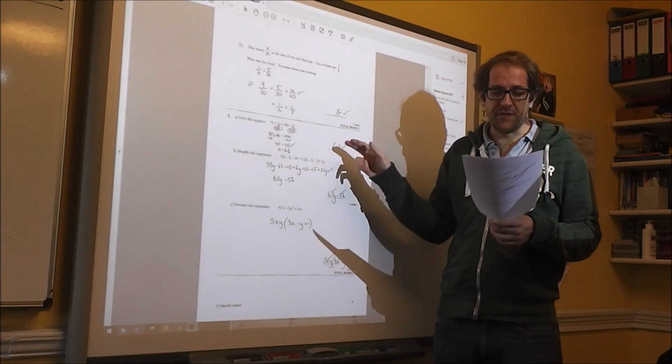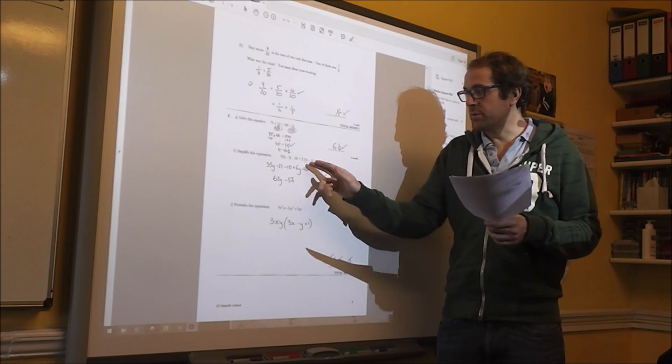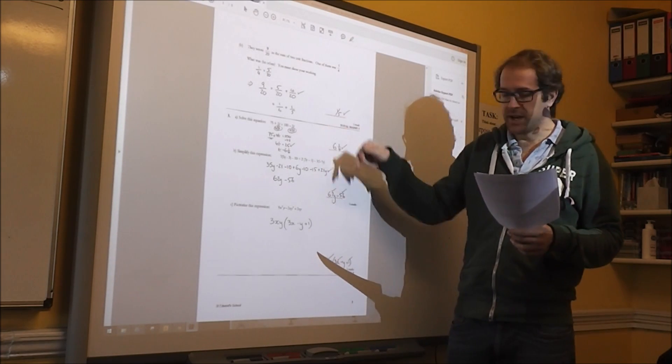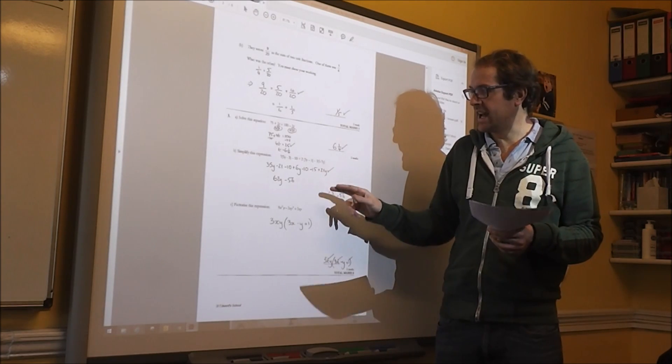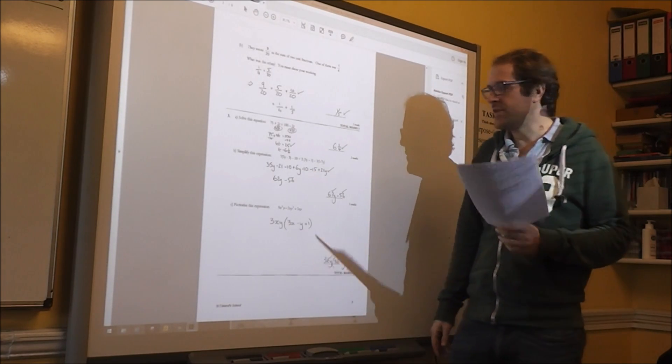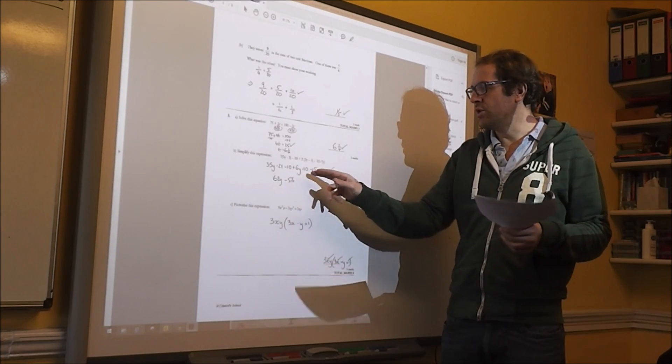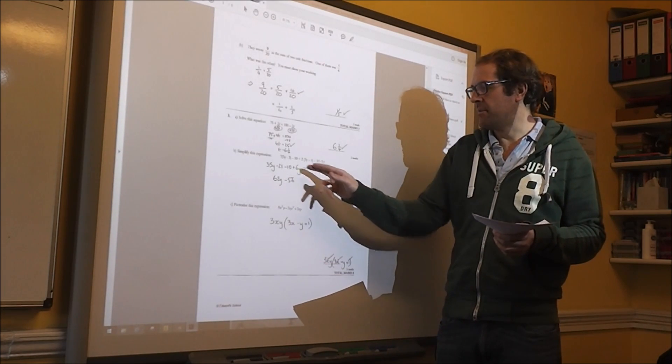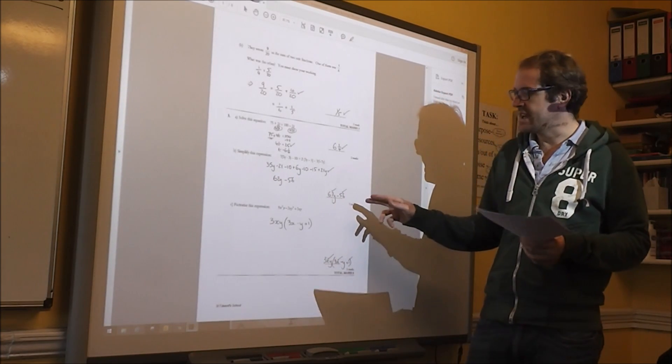Simplifying the expression, be very careful with negatives when you're multiplying out of brackets, especially on this last one. So it's plus 21y at the end. Do not forget that. And then collect like terms very carefully, remembering that you're taking away all these constants and then adding all the variables. So 62y minus 56.